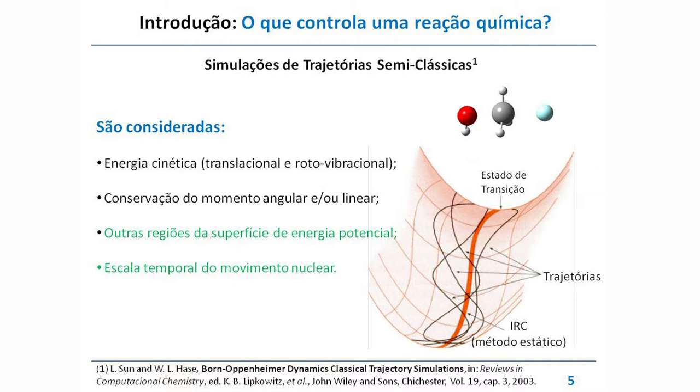Para utilizar a teoria de estado de transição, basta conhecer a região próxima dos reagentes, do estado de transição e do produto. Mas existem reações que, às vezes, não passam por essas regiões — passam por outras regiões e não seguem o caminho de menor energia. A teoria de estado de transição é uma teoria estatística e não leva em consideração os efeitos temporais na escala de movimento dos núcleos e, muito menos, dos elétrons.